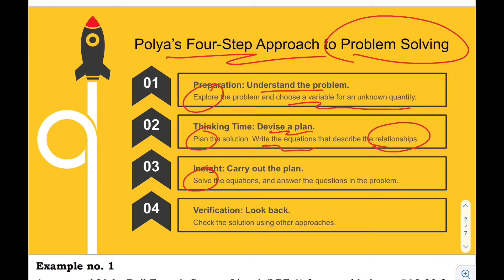Step three: solve the equations. Here, just carry out the plan and answer the questions in the problem. Step four: check the solutions. Here you can employ other approaches to examine the appropriateness of the answer. Let's have our first example.